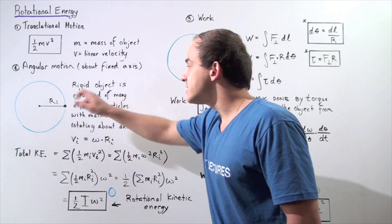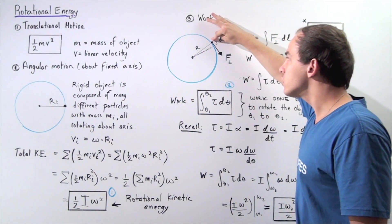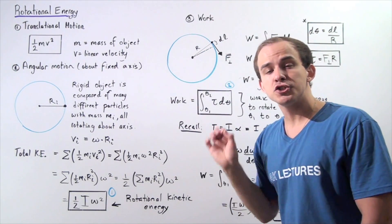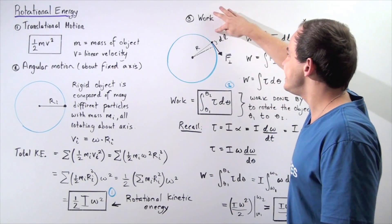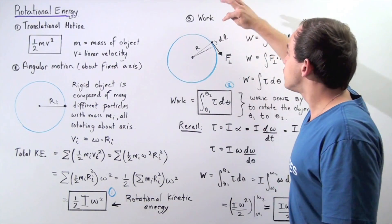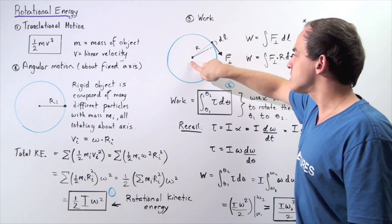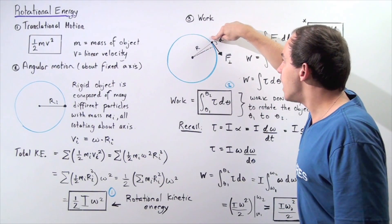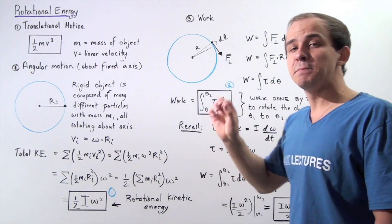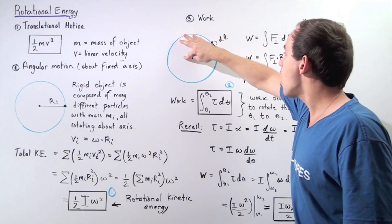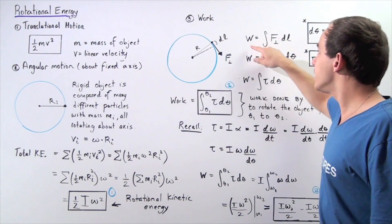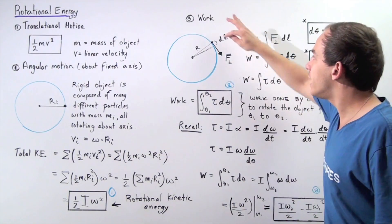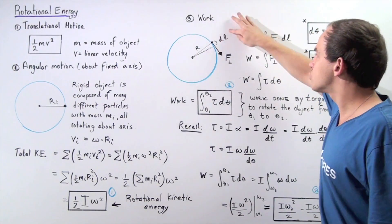Let's suppose we have the same object. We choose a particle with mass mi, and a force acts on that particle over a very small, infinitely small distance dl. Notice the distance from this particle to the axis of rotation is given by r, and the force acting on our tiny particle is perpendicular to this distance r. So the work done is equal to the integral of this force multiplied by dl.